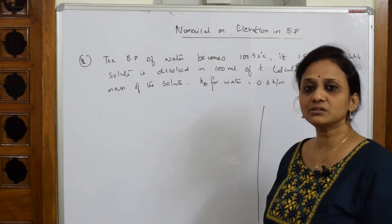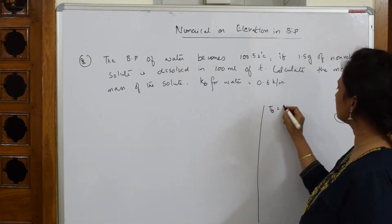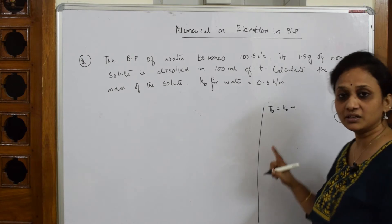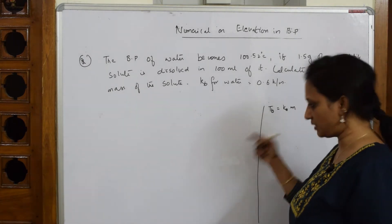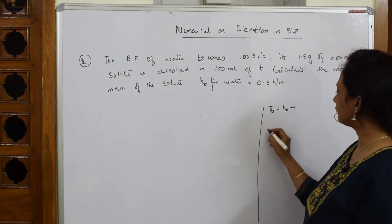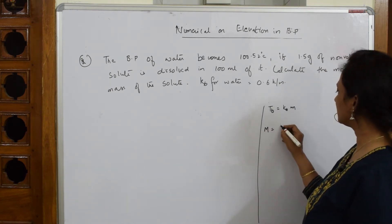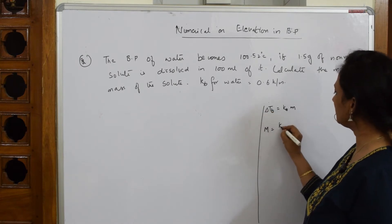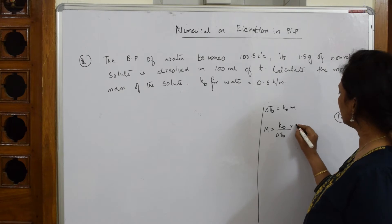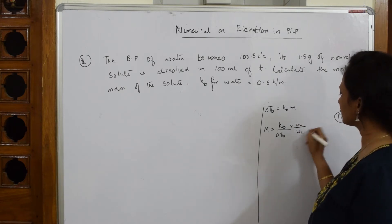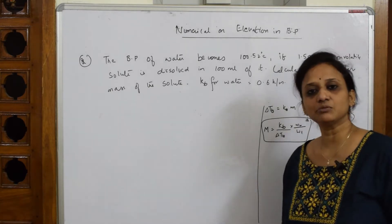Next we can go with the conversion of the units. Elevation in boiling point I already said: ΔTB is equal to KB into M. In the earlier video I have also derived the step by step. When I have to finally find the molecular mass, only thing you have to remember is M equals KB by ΔTB into W2 by W1. This is the basic formula. This is the most important formula for calculating molecular mass.